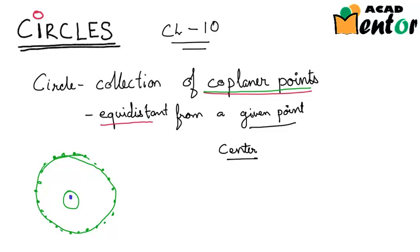Now this distance from the center to the circle or to the points on it is known as the radius, denoted by small r.